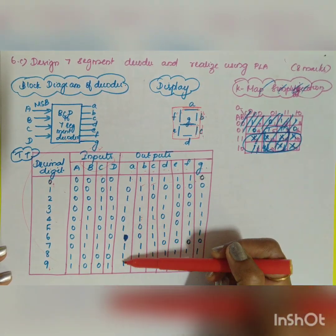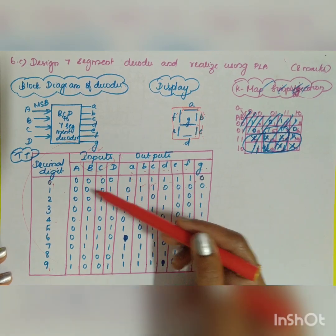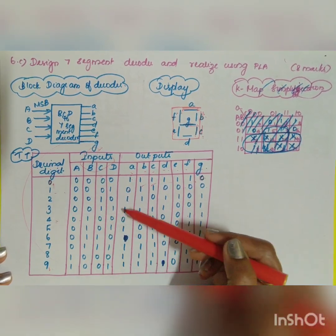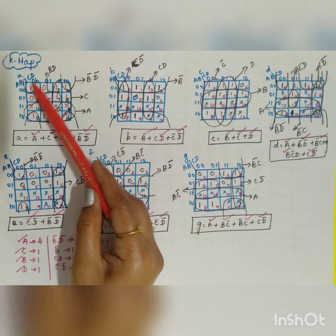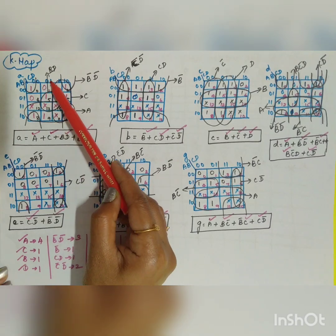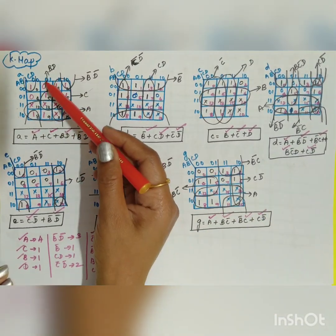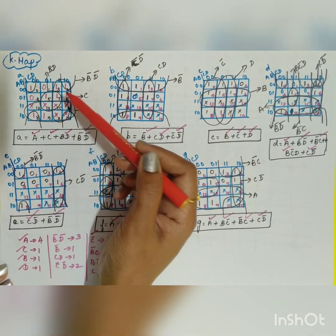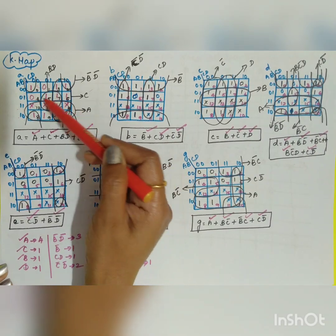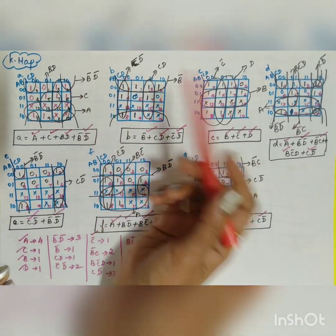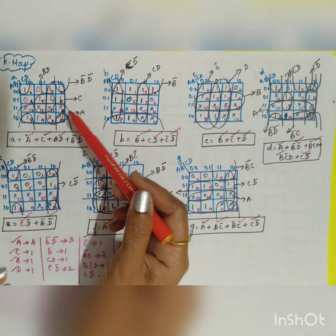You can simplify the truth table using a K-map. For segment 'a', only decimal one and four give zero — all others are one. On the K-map for A, B, C, D, the values are: 0, 0, 0, 1, 1, 1, 0, 0, 0, 1, 1, 1, 1, 0. Unused entries 10 through 15 are taken as don't cares.